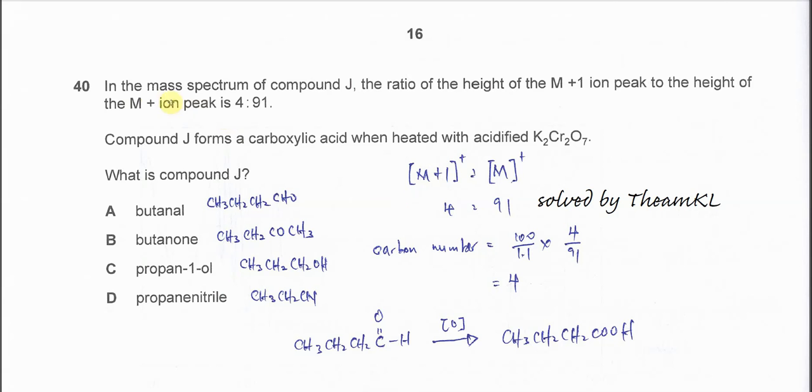Question 40. In the mass spectrum of compound J, the ratio of the height of the M+1 ion peak to the height of the M+ ion peak is 4 to 91.